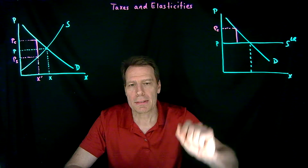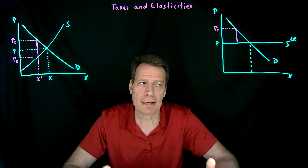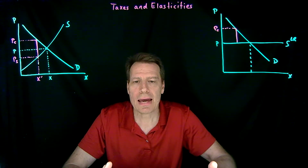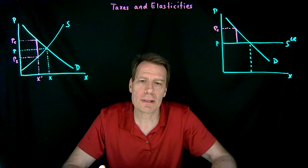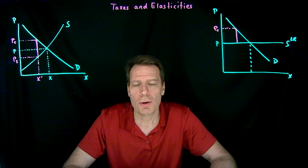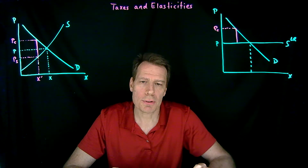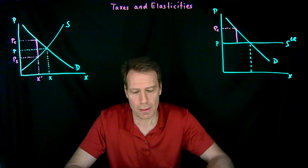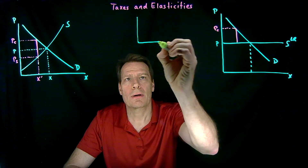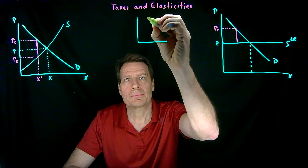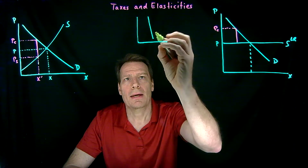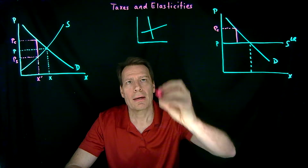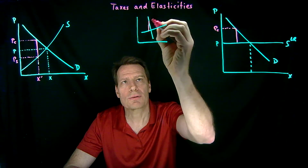There's a more general lesson that emerges from thinking about elasticities and taxes. Taxes are going to be passed on to that side of the market that is relatively more inelastic. The relatively more inelastic portion of the market is going to bear a disproportionate burden of a tax. You can, for example, draw a case where you have a steep demand curve and a shallow supply curve.